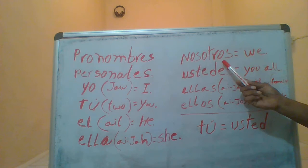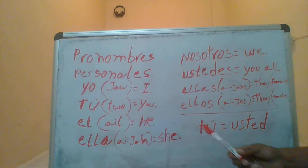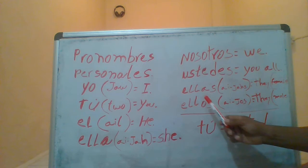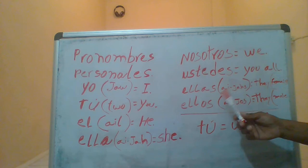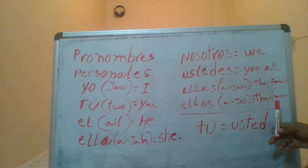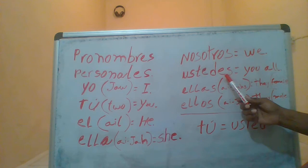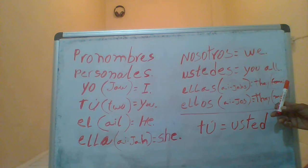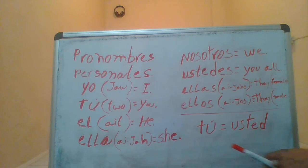We continue with 'nosotros' — that is 'we'; 'ustedes' — 'you all.' Then 'ellas' — this one has an -AS at the end, meaning it's plural and refers to females, like girls and women. 'Ellos' is for 'they' male. So: 'ellos' — they, male; 'ellas' — they, female; 'nosotros' — we; 'ustedes' — you all.